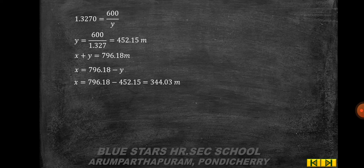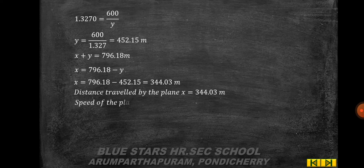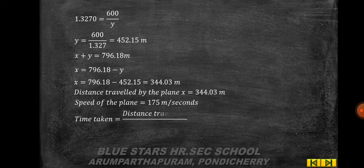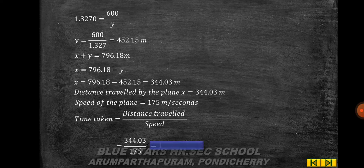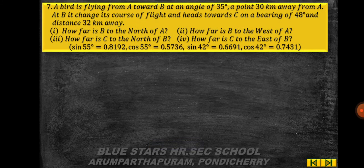Distance traveled by the plane x = 344.03 meters. Speed of the plane = 175 m/s. Time taken = distance/speed = 344.03/175 = 1.97 seconds.